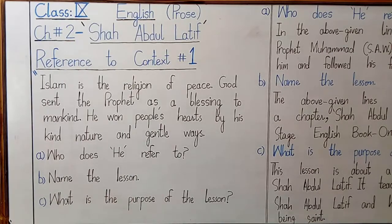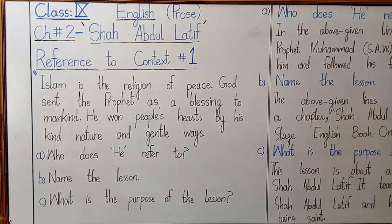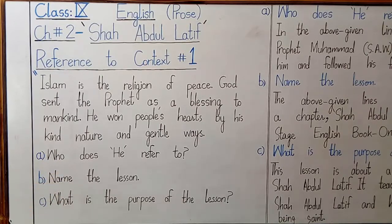If you remember, I discussed this reference to context in the very first lecture on how to maintain the register and the contents we will be going through in cross point 3 grammar and conversation. I told you this is an integral part of your board paper, and this question carries 6 marks — which means each of these 3 questions carries 2 marks. Hence you have to answer these 3 questions which should justify at least 2 marks.